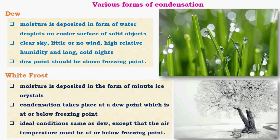First let us look at various forms of condensation. The first one is dew. Dew occurs when the condensation or dew point is above freezing point, so we do not see any formation of ice. Moisture is deposited in the form of water droplets on cooler surfaces or solid objects. Clear sky, little or no wind, high relative humidity and long cold nights facilitate formation of dew. The dew point should be above freezing point — this is the most important point.